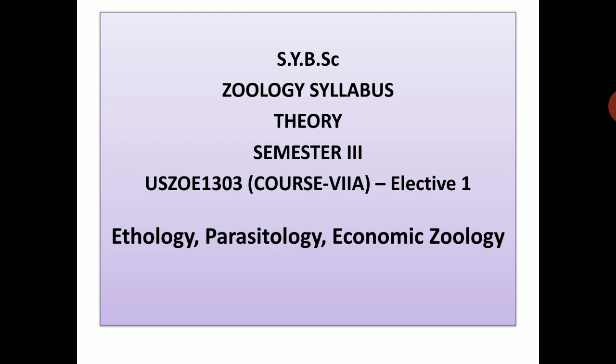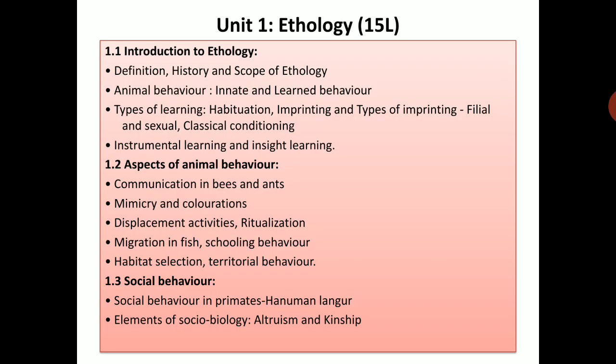Today, as it is the first lecture, we will not go directly to the learning aspects. We are not going to start the learning module but we are first going to discuss how we can learn this particular paper of Applied Zoology. As you can see in this particular slide, it is Semester 3 and it is Elective 1, that is Paper 3. Being a very interesting paper, I have selected Ethology, Parasitology and Economic Zoology as the Elective 1 paper.